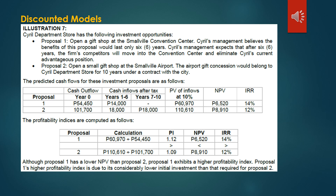For Proposal 2: Present Value of Inflows at 10% = $110,610 ÷ Initial Investment of $101,700 = Profitability Index of 1.09. Although Proposal 1 has the lower NPV than Proposal 2, Proposal 1 exhibits a higher profitability index of 1.12 compared to 1.09. Therefore, Proposal 1 has a higher profitability index due to its considerably lower initial investment than that required for Proposal 2. And that covers all the capital budgeting techniques.